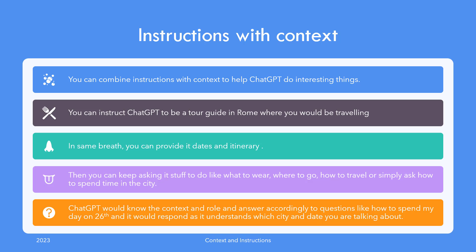So far we discussed adding context and instructions in your prompts to get interesting results from ChatGPT, but nothing stops you from combining the two. For example, you can provide context that you will be visiting Rome from October 20th to 30th and paste your itinerary. Then instruct ChatGPT to be your tour guide for the trip and answer all questions from a tourist on a leisure trip — providing full information on what to do and not do at a particular place, any scams to avoid, and planning to avoid long waiting lines. You can then ask questions like what are the best places to visit, where to stay, what to do on October 26th — and it should understand which city you would be in that day using your itinerary, know that the 26th is a weekend, and give suggestions accordingly.